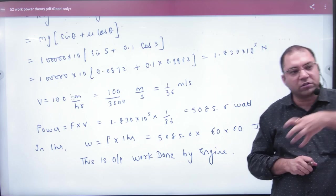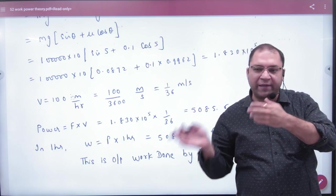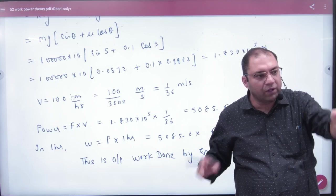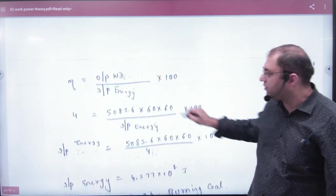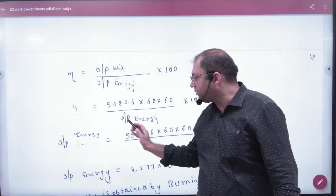We calculated the engine's force, multiplied force by velocity to get power, then multiplied by time to get work done. This gives us the numerator in the efficiency equation. Efficiency 4% was already given, so solving this gives us the input energy.